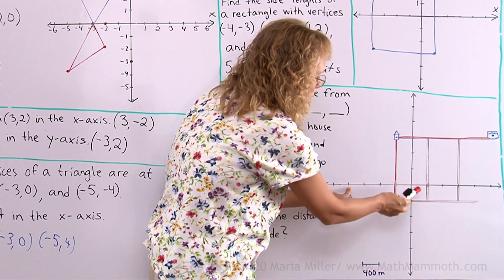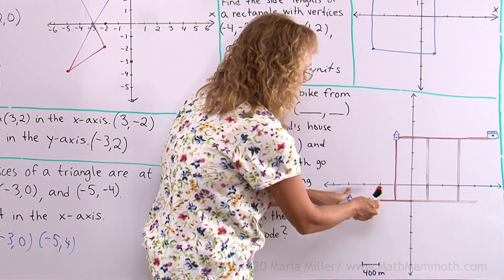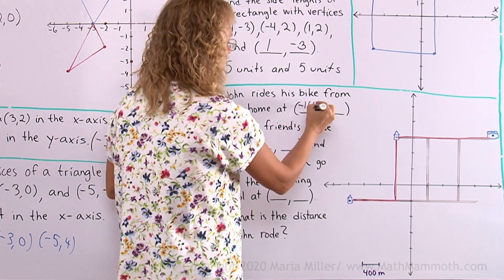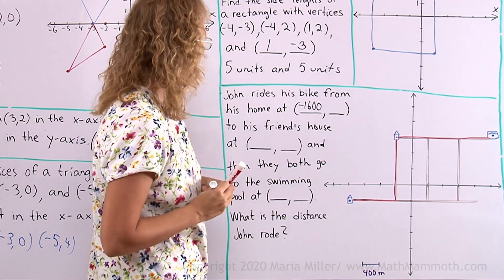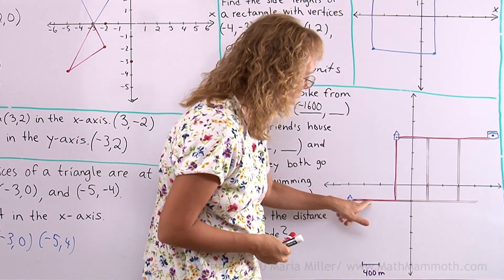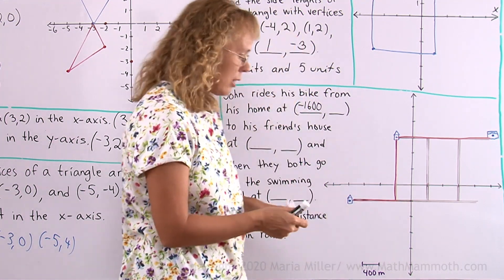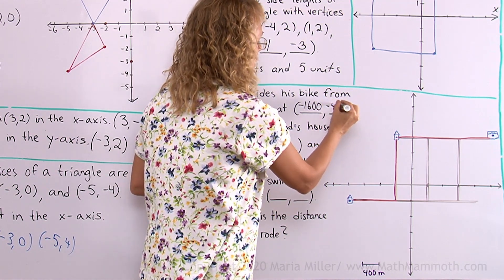If each unit is 400, there's 400, 800, 1200, 1600, but it's negative. So this would be negative 1600 meters. And the y-coordinate is right here at negative one unit, but each unit is 400. So it would be negative 400.